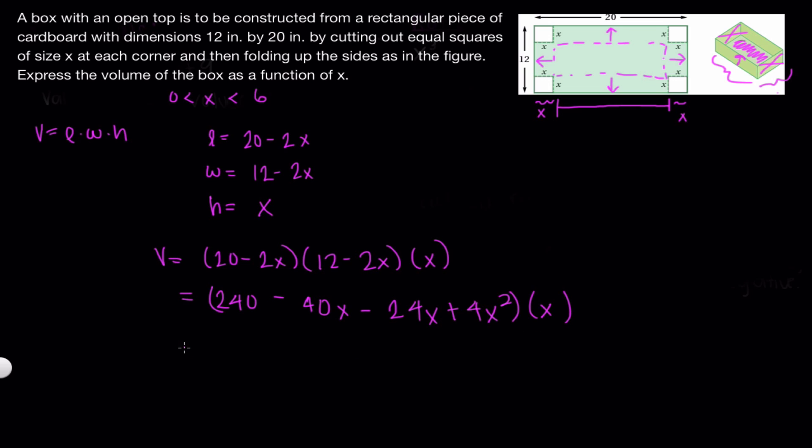Giving us our final answer: V(x) = 240x - 64x² + 4x³. This is the volume of the box in terms of x. And then of course, we have to state our domain, which is from 0 to 6. And this is our answer.